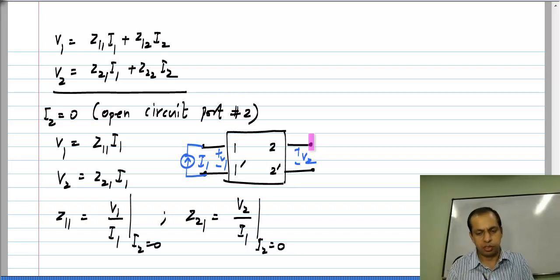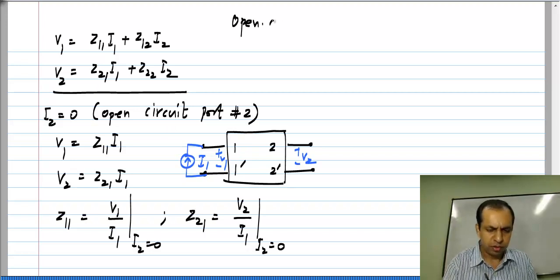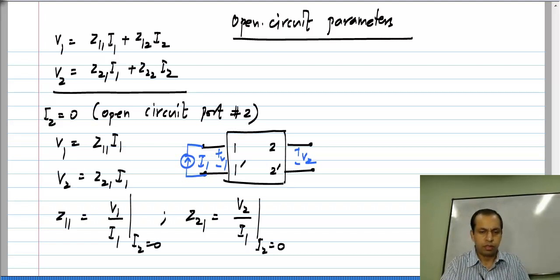Now, because you make these measurements with the second port open circuited, these Z parameters are also known as open circuit parameters. So, you set I2 equal to 0. So, only one of the independent sources comes into play that is all that is there to it. Like I said you could take different combinations of I1 and I2, but this is the most convenient.